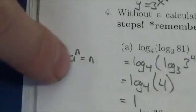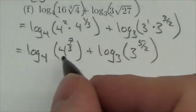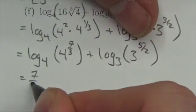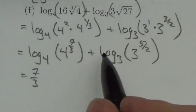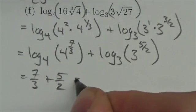And then we keep going back to this one rule. Log base a of a to the n is equal to n. So log base 4 of 4 to the 7/3 is 7/3. Log base 3 of 3 to the 5/2 is 5/2.